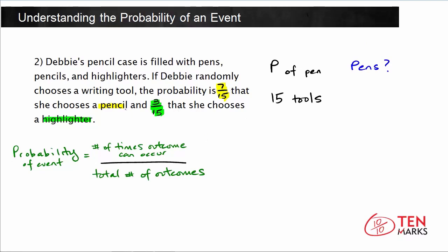So the probability that she chooses a pencil is seven-fifteenths. Now we know the total number of outcomes is 15, so that's what the number in the denominator represents, the total number of outcomes, which means 7 is the number of pencils. So we have 7 pencils.